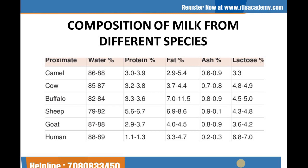Talking about sheep milk, it consists of 79 to 82% water, 5.6 to 6.7% protein, 6.9 to 8.6% fat, 0.9 to 1.0% ash, and 4.3 to 4.8% lactose. Talking about goat milk, it consists of 87 to 88% water, 2.9 to 3.7% protein, 4.4 to 4.5% fat, 0.8 to 0.9% ash, and 3.6 to 4.2% lactose. Human milk generally consists of 88 to 89% water, 1.1 to 1.3% protein, 3.3 to 4.7% fat, 0.2 to 0.3% ash, and 6.8 to 7.0% lactose.